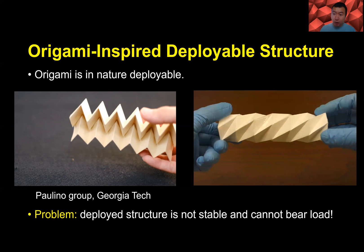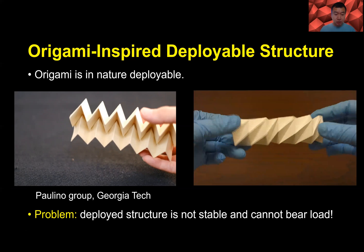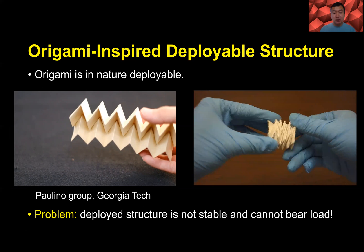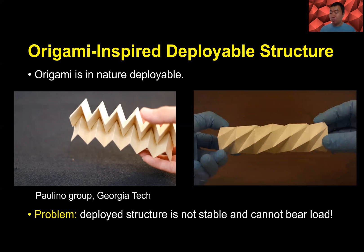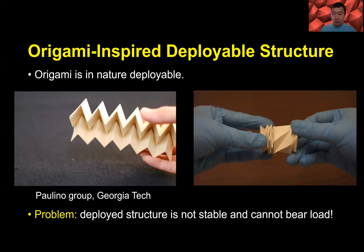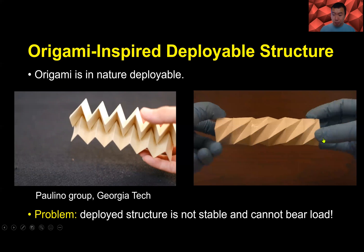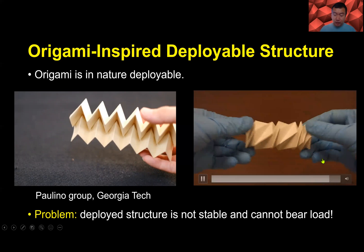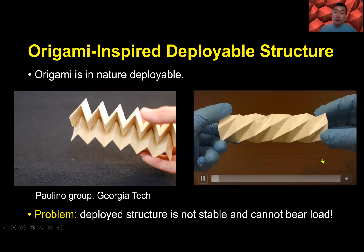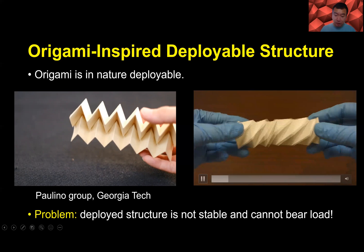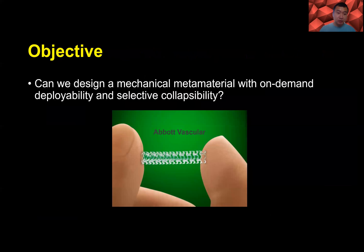But the problem is that deployable structures are not stable — they cannot bear load. A little perturbation load in the vertical direction will collapse the structure. So our motivation is to develop a mechanical material with on-demand deployability and selective collapsibility.